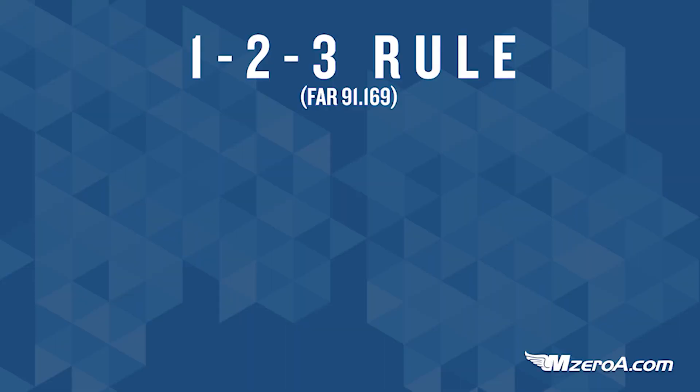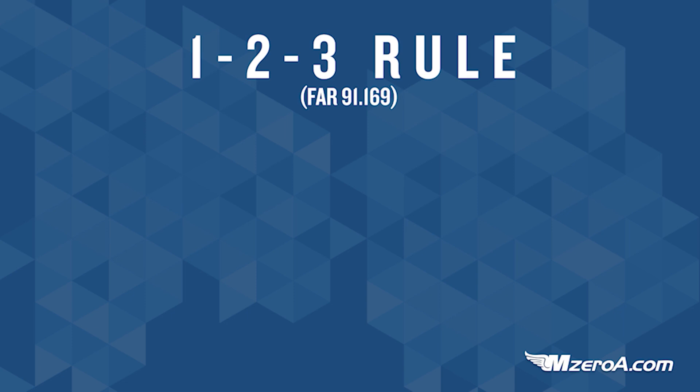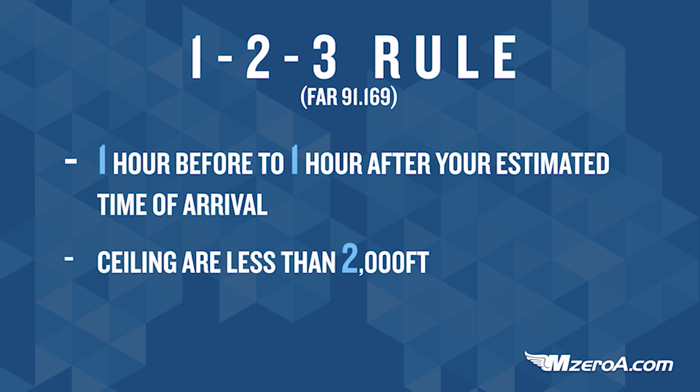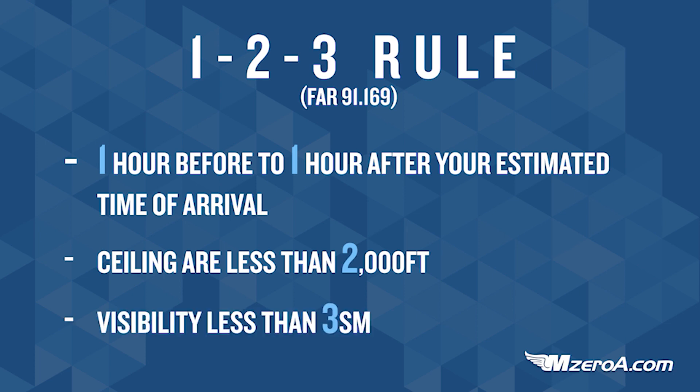The 1-2-3 rule states that the pilot must file for an alternate airport if the weather at the destination — one hour before the intended time of arrival to one hour after the intended time of arrival, that's the '1' in 1-2-3 — there is a ceiling of less than 2,000 feet, that's the '2', and visibility of less than 3 statute miles, that's the '3'.